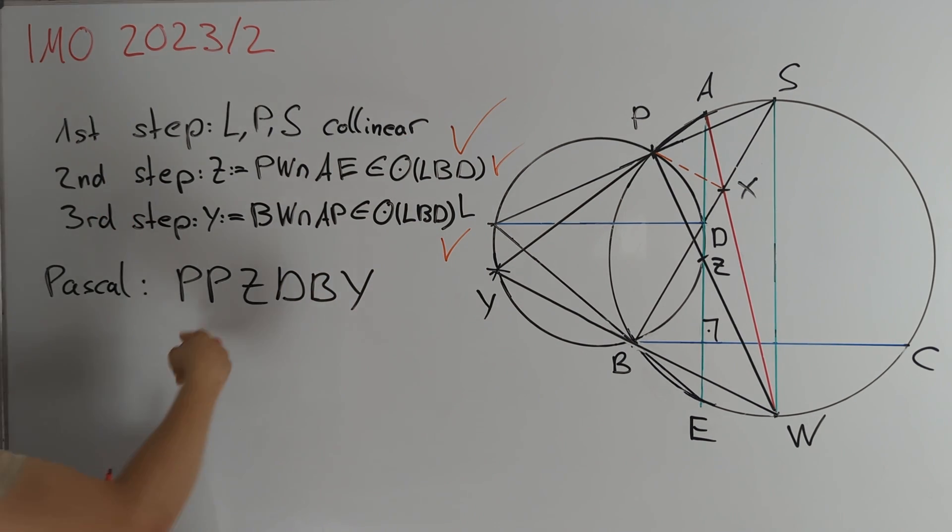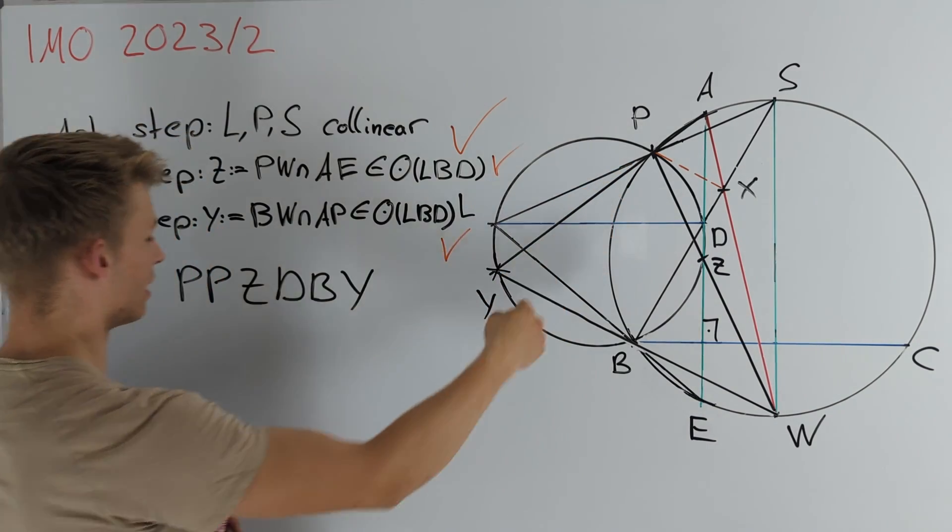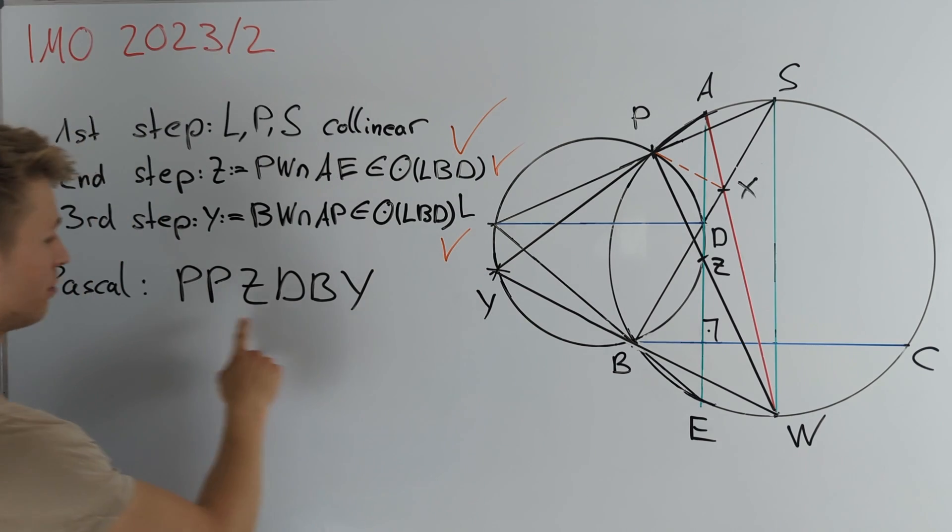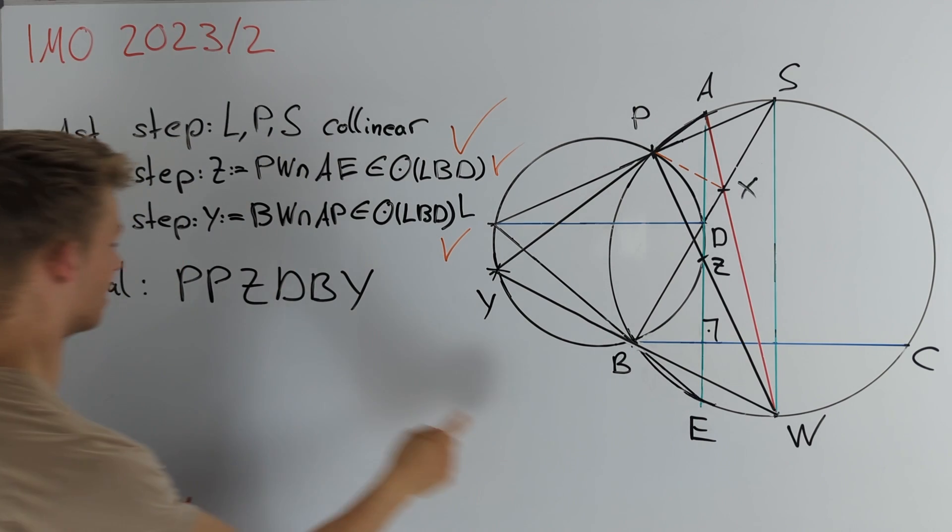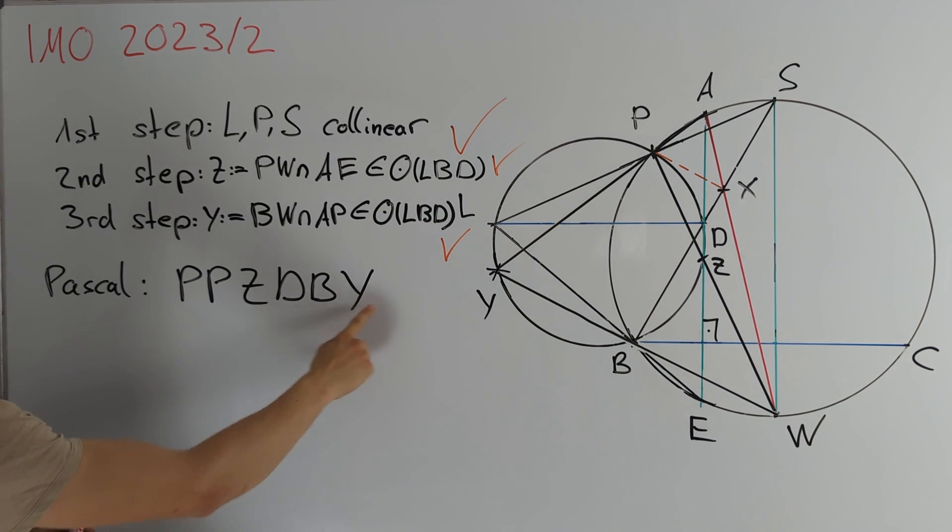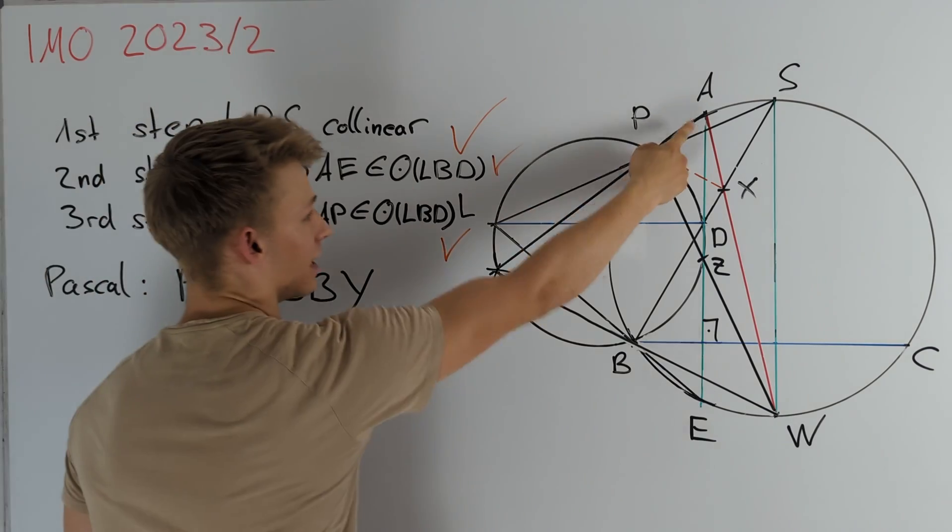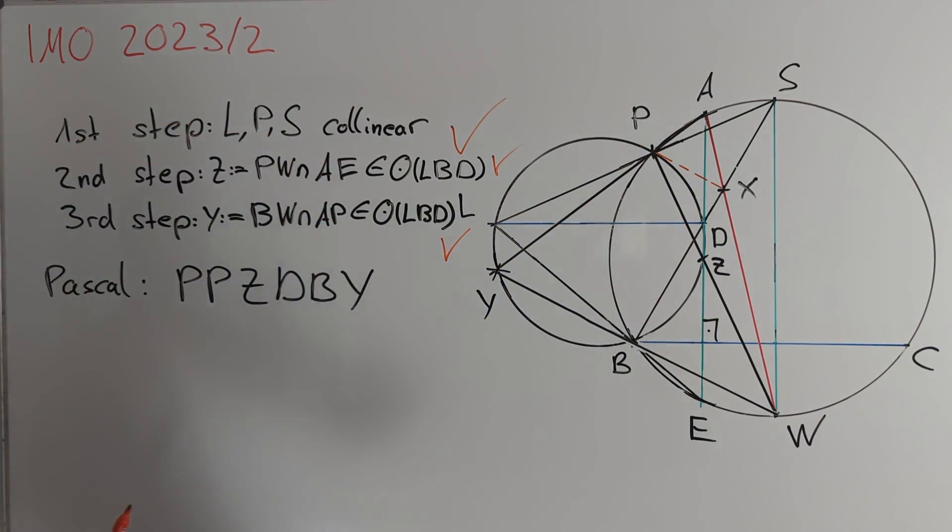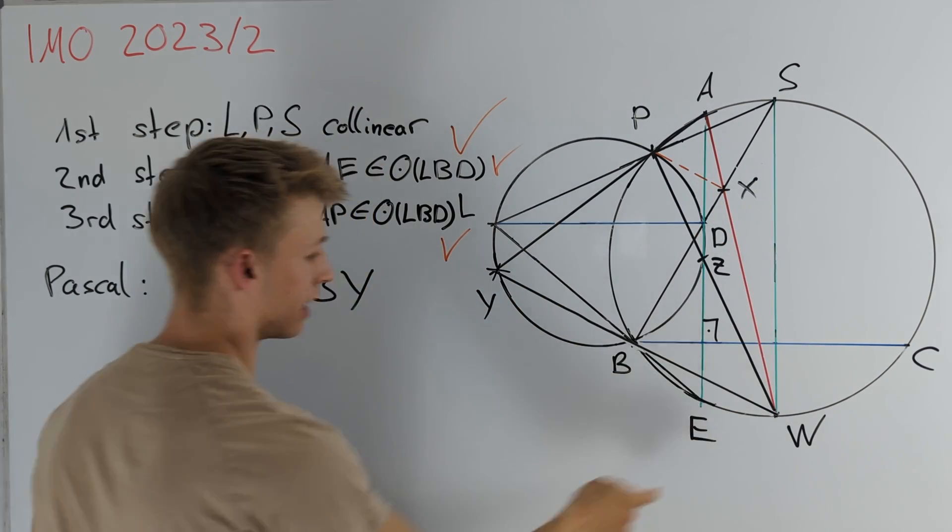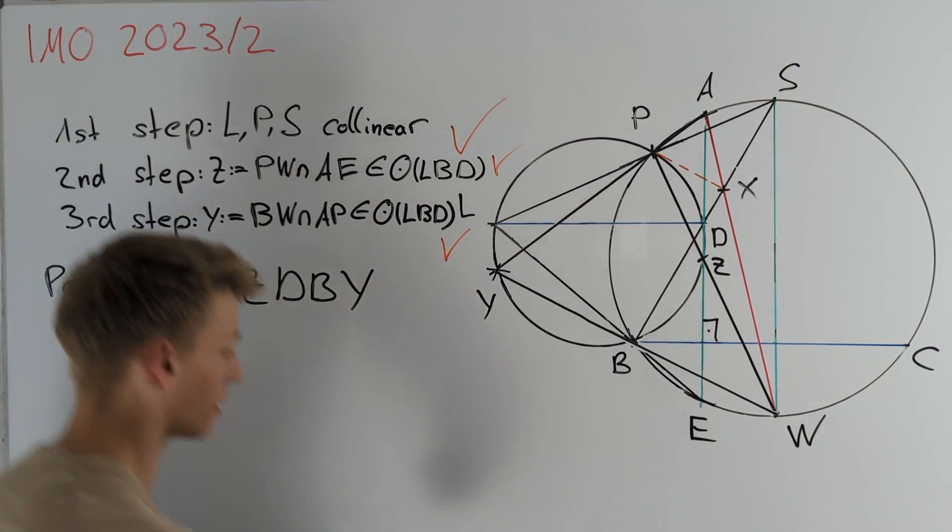Namely, PP which is just the tangent to P intersected with DB is X. PZ intersected with BY is W. And Z intersected with YP is A. And therefore, by Pascal's theorem, these three points A, X and W are collinear. And we are done.